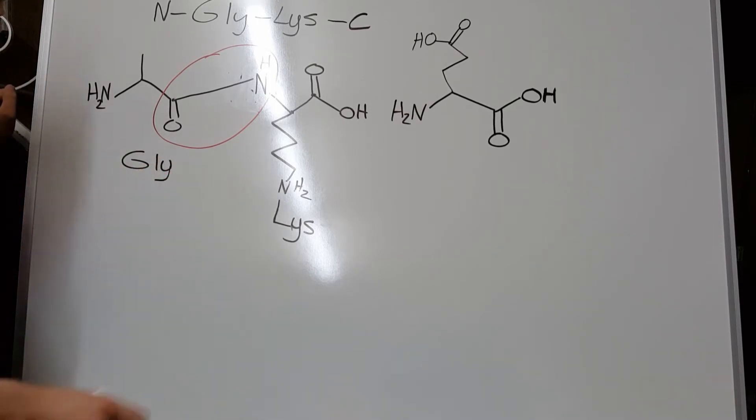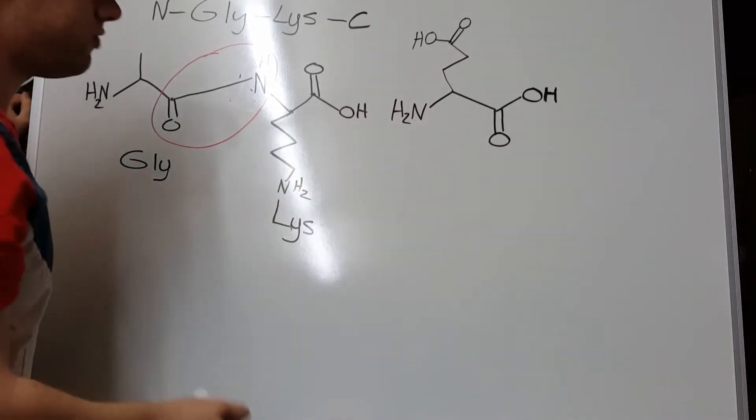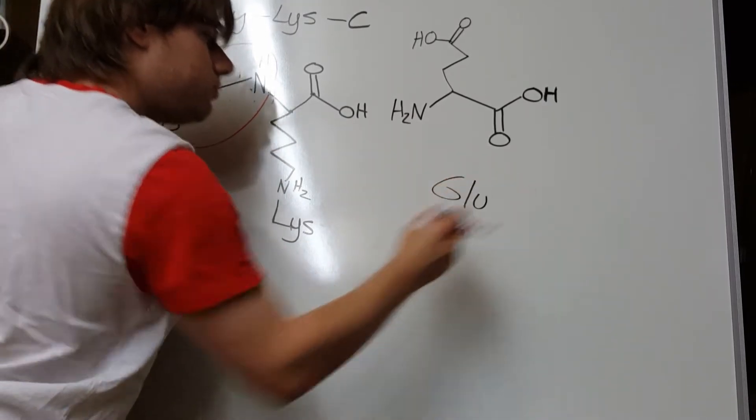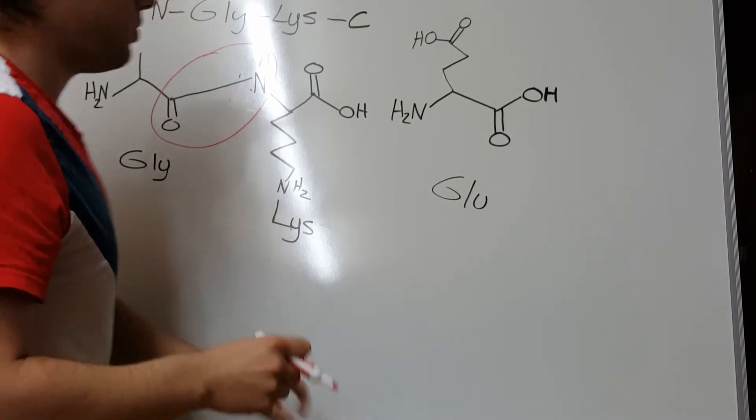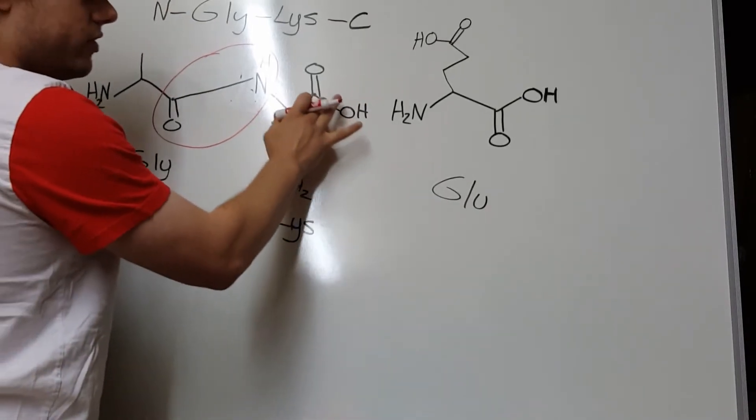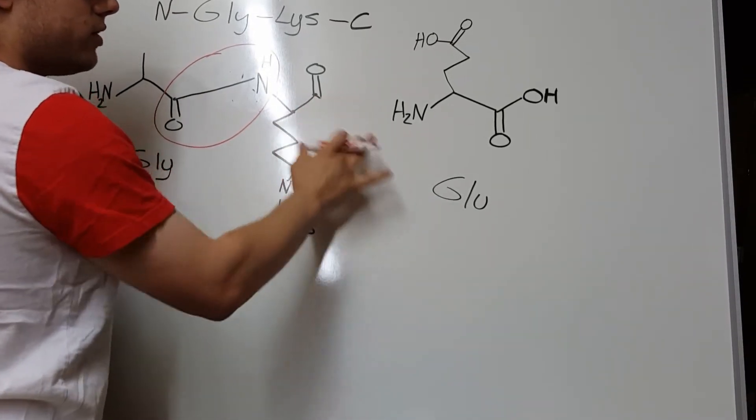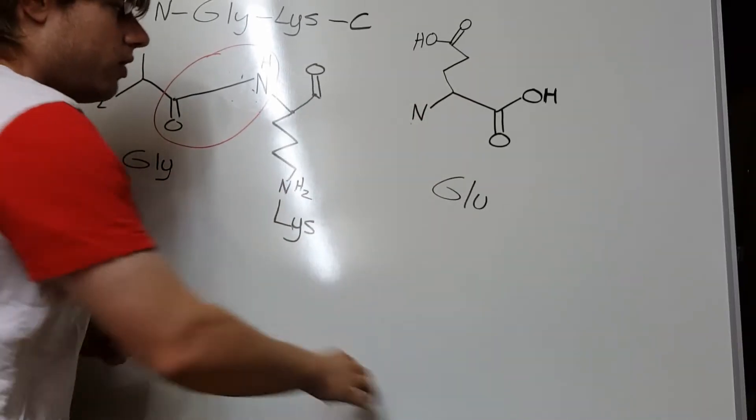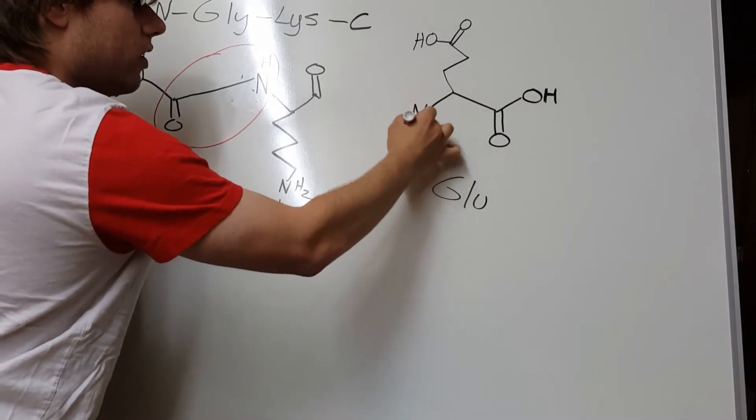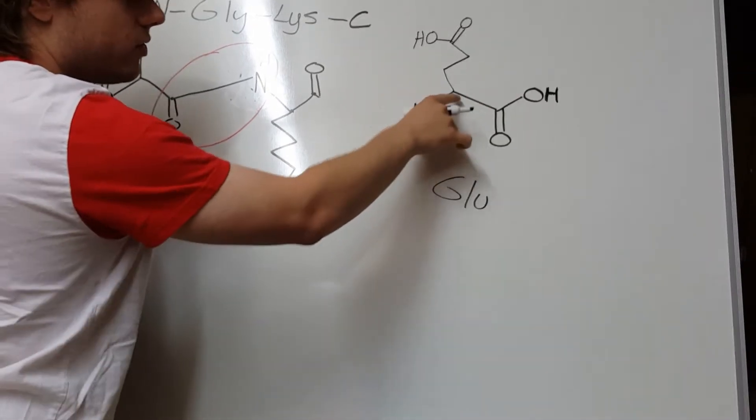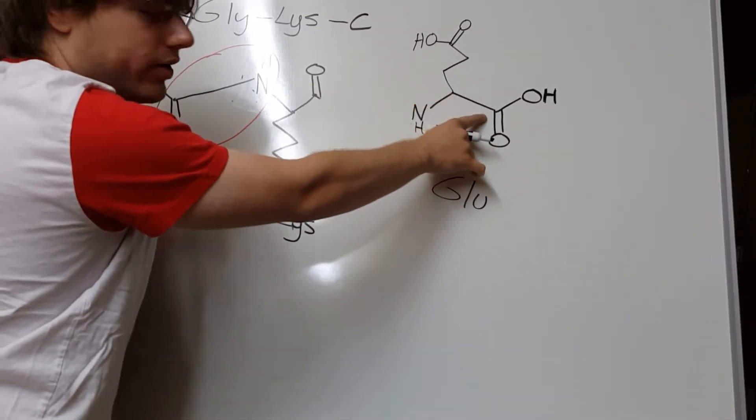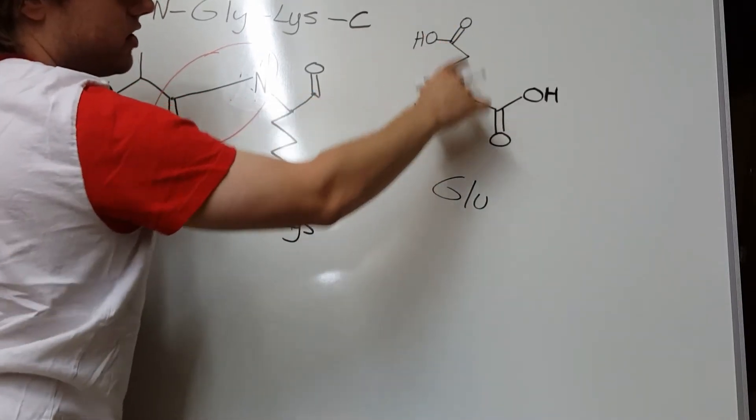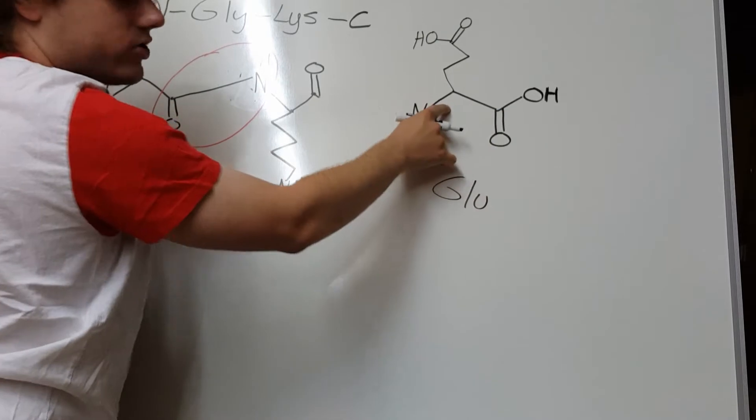So let's do the same thing now for the other amino acid I've drawn here, which is glutamate. Once again, what you're going to do is erase the OH group. You're going to take one hydrogen off of the amino group. And again, we know it's this amino group because it's the one that's one carbon away from our carboxylic acid group. And this carboxylic acid group must be our side chain then because we know that this one's right next to our amino group.